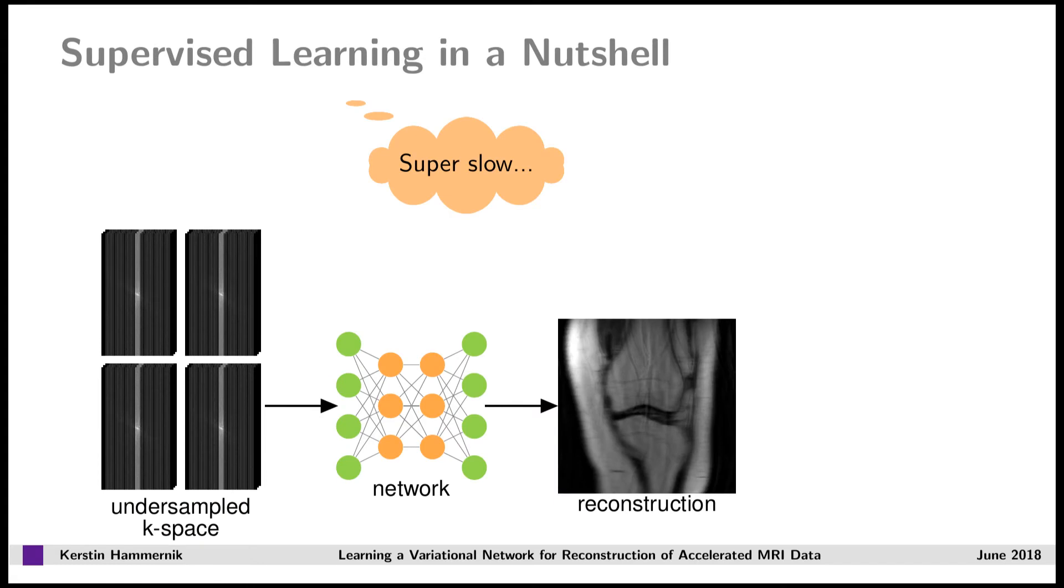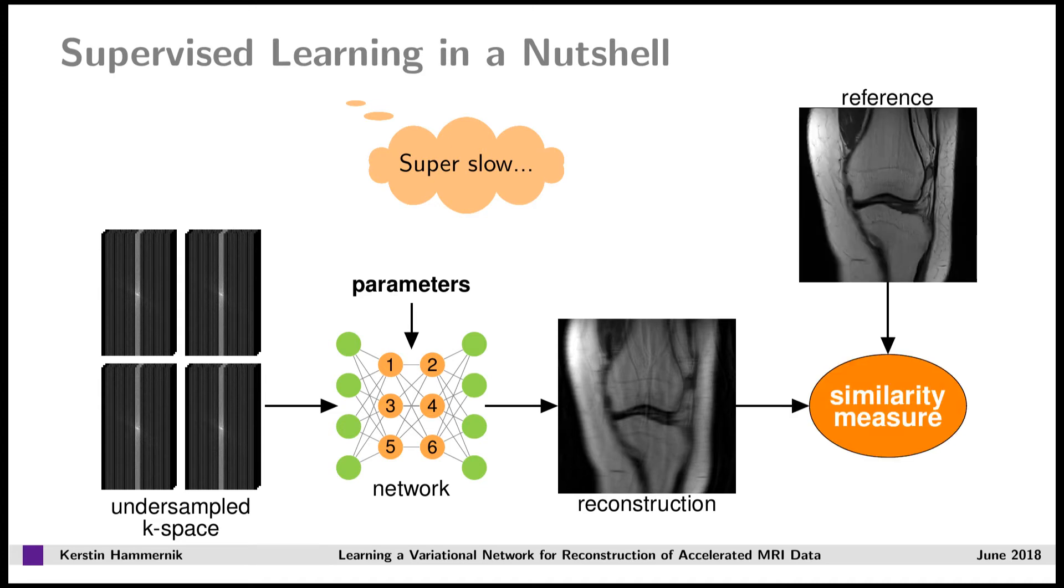Let's see how the training of this model works. We start from an initial zero-filled solution and put it through a network to get some reconstruction. This network has some parameters we want to learn. During training, we compare the reconstruction to a fully sampled reference using some similarity measure. This gives us a reconstruction error, which is propagated back to the variational network, and this process is repeated until convergence.